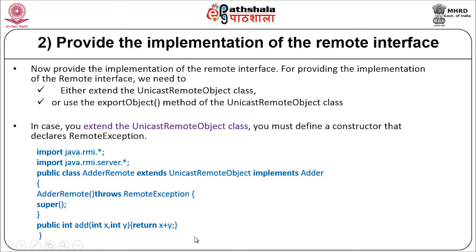For the second step, we provide the implementation of the remote interface. The implementation can be provided by extending the UnicastRemoteObject class. We create a class called AdderRemote that extends UnicastRemoteObject and implements the Adder interface. This class implements the created Adder interface, and defines the add method with its implementation. As mentioned, this implementation class should have a no-argument constructor, which calls the base class constructor.